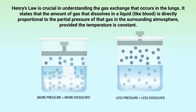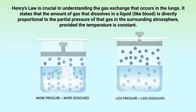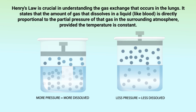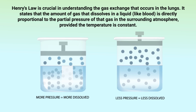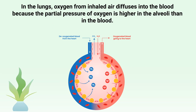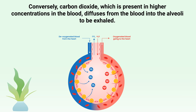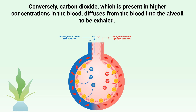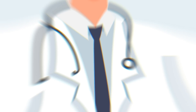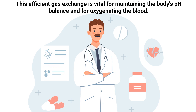Henry's Law is crucial in understanding the gas exchange that occurs in the lungs. It states that the amount of gas that dissolves in a liquid is directly proportional to the partial pressure of that gas in the surrounding atmosphere, provided the temperature is constant. In the lungs, oxygen from inhaled air diffuses into the blood because the partial pressure of oxygen is higher in the alveoli than in the blood. Conversely, carbon dioxide, which is present in higher concentrations in the blood, diffuses from the blood into the alveoli to be exhaled.